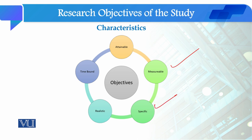Research objectives जو हैं वो specific होते हैं — जब हम research objectives बनाते हैं तो उसमें हम अपनी research project का scope determine कर लेते हैं। Research objectives attainable होते हैं, यानि हम उन objectives की basis पر data collect कर सकते हैं, उस data को analyze कर सकते हैं, और उसको interpret कर सकते हैं।